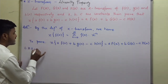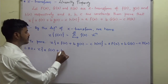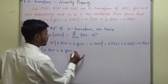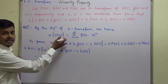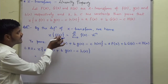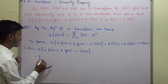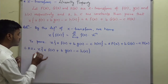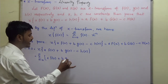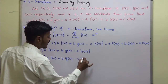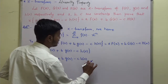The left-hand side is Z-transform of A times F of N plus B times G of N minus C times H of N. Applying the definition of Z-transform, this becomes summation N equals 0 to infinity of the quantity A times F of N plus B times G of N minus C times H of N, all multiplied by Z to the power minus N.